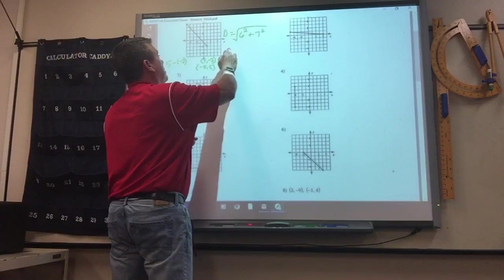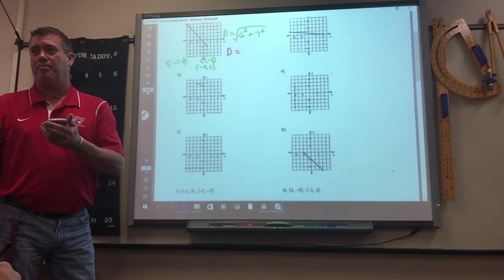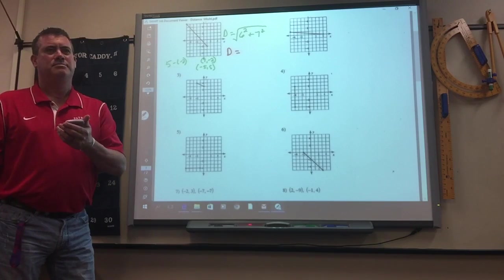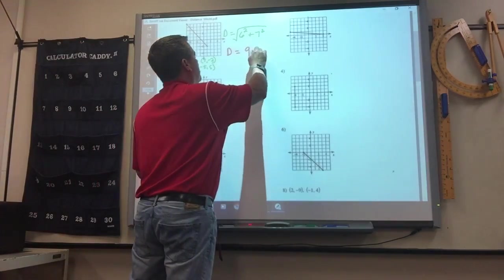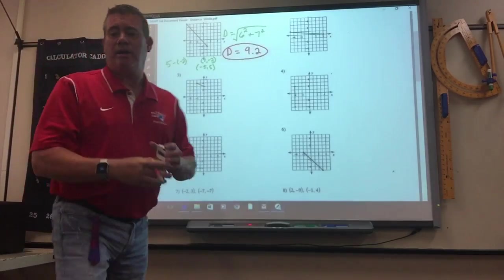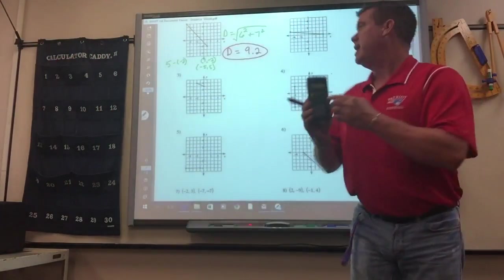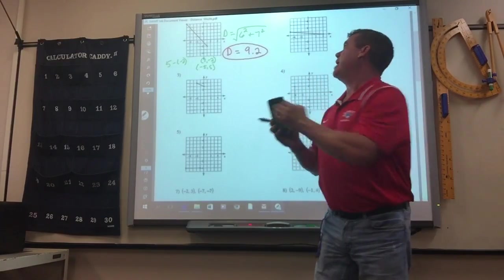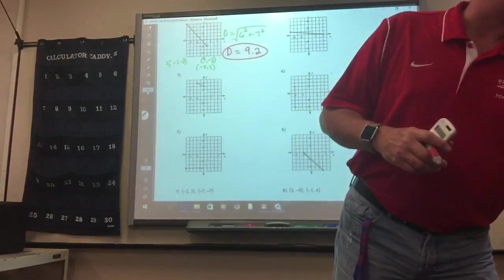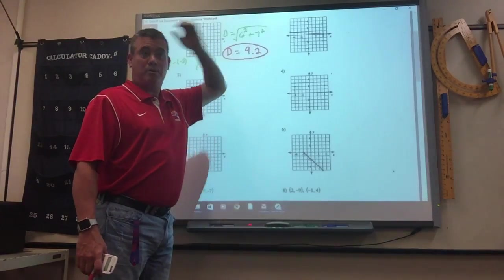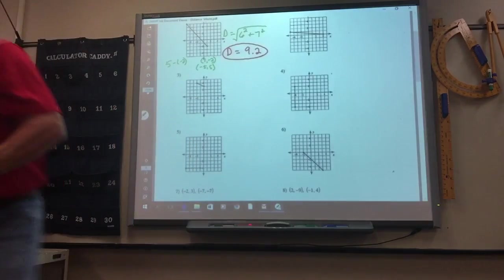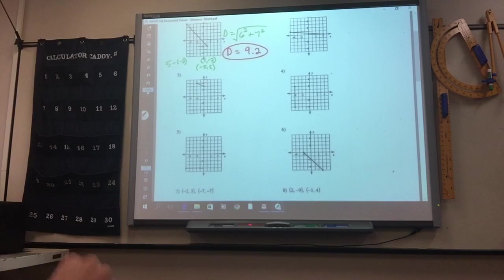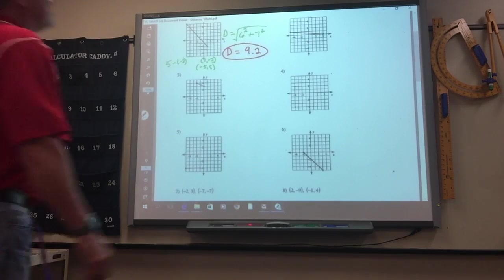Round to the nearest 10th. You should get 9.2. How do you put it in these calculators? Yeah, the different calculators, the smaller ones, you got to do the inside first. You got to go 6 squared plus 7 squared, press equals, and then hit the square root. On the big calculators, you press the square root sign first, and then put 6 squared plus 7 squared, and hit equals.